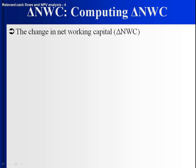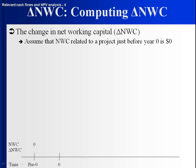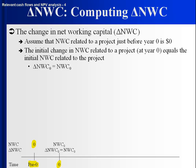We're interested in the change in net working capital, so how do we compute that? We assume that just before the project starts at time zero, there's no net working capital. Therefore the initial change — the change at time zero — is simply equal to whatever that initial level is. So if you start a project and you need to buy inventory, time zero you've got to buy some inventory — that's the change. You went from having no net working capital to having some right when the project started.